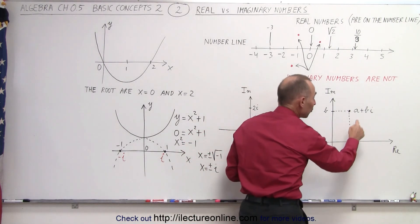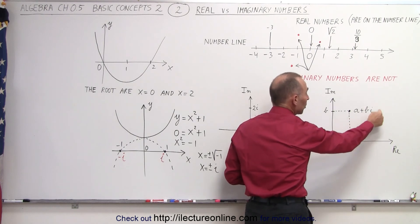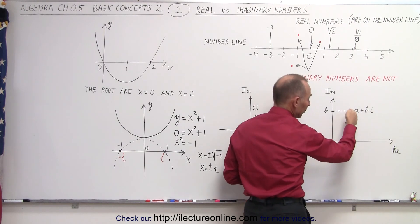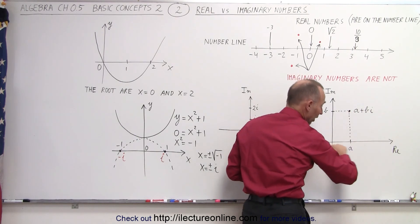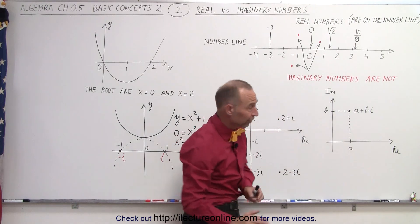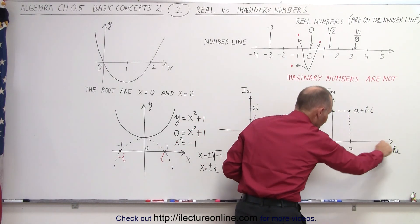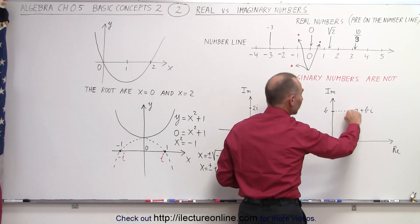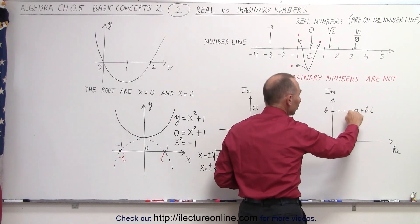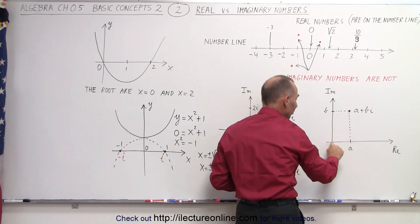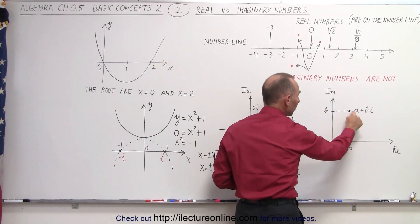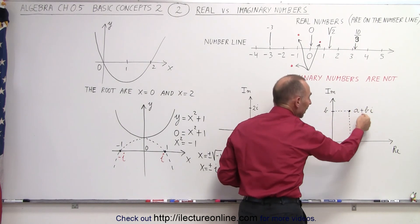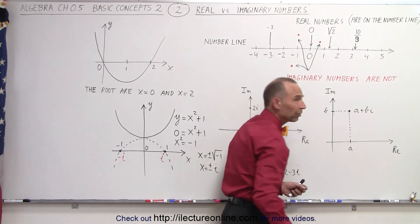Imaginary numbers can have real parts to them. For example, a plus bi is what we call an imaginary number that has a real part and an imaginary part. If we drop a line straight down from this dot — which is not on the number line — to the horizontal number line, we see that it hits the number line at value a. If we drop a horizontal line from the dot to the vertical axis, that's a distance b away from the origin. So this number is called a plus b times i, where bi is the imaginary part and a is the real part.